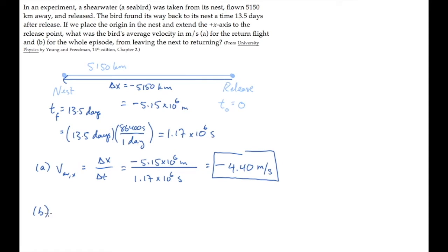In part B, we're asked to redo this calculation for the whole episode, from the time when the bird first leaves the nest to when it returns. In this case, the bird begins and ends at the same location, the nest, so its change in position, delta x, equals 0. The average velocity then, equal to delta x over delta t, is also 0. When there's no displacement, no change in position, the average velocity is always 0.